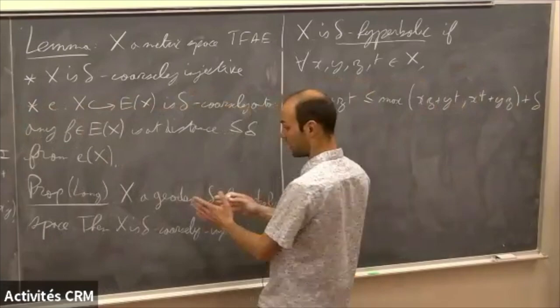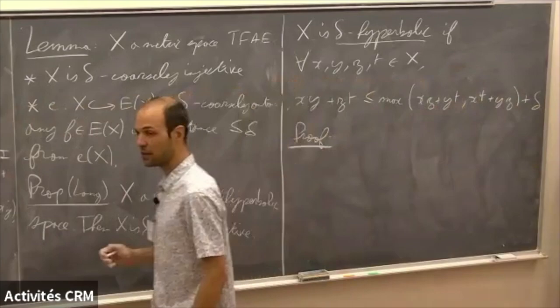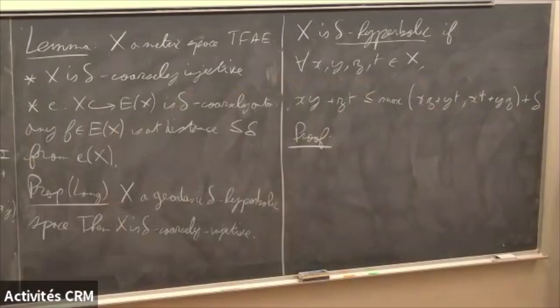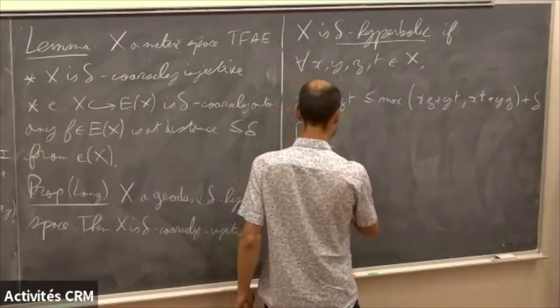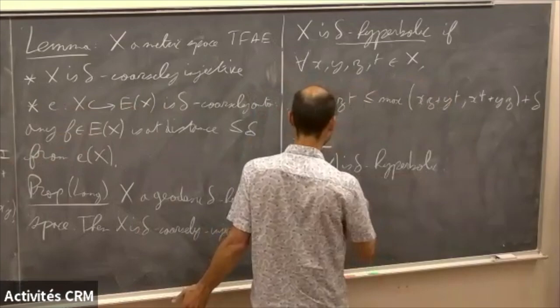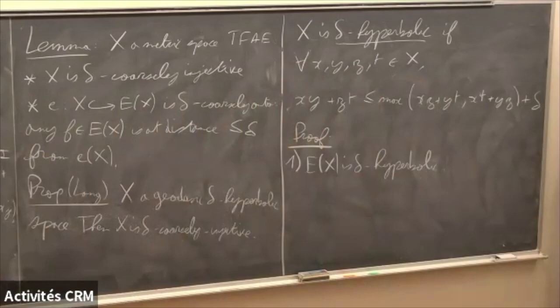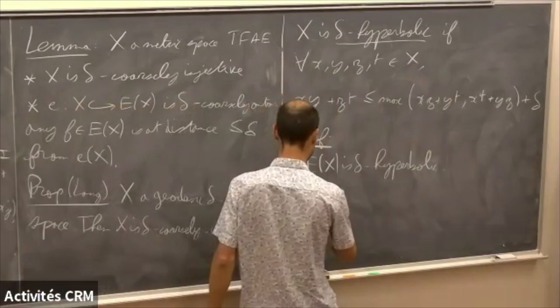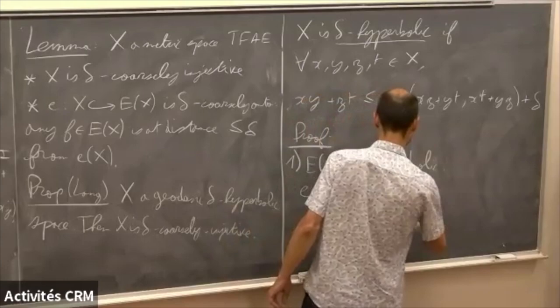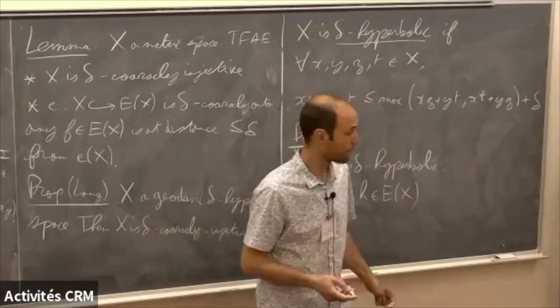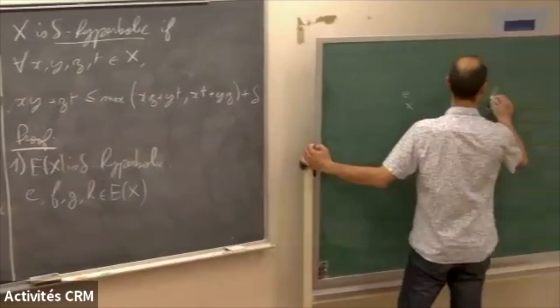So first part: E(X) is Delta-hyperbolic. In order to apply the four-point condition, I will take four points in the injective hull. In my description of the injective hull, points are functions from X to R. I will consider four functions e, f, g, h in the injective hull. The distance between e and f is the supremum over all x of |e(x) − f(x)|. For simplicity, assume the supremum is a maximum, so there exists some x such that the L∞ norm of e − f equals e(x) − f(x).